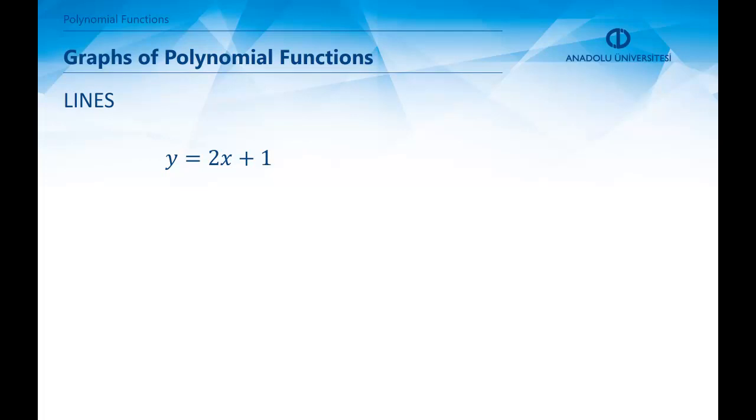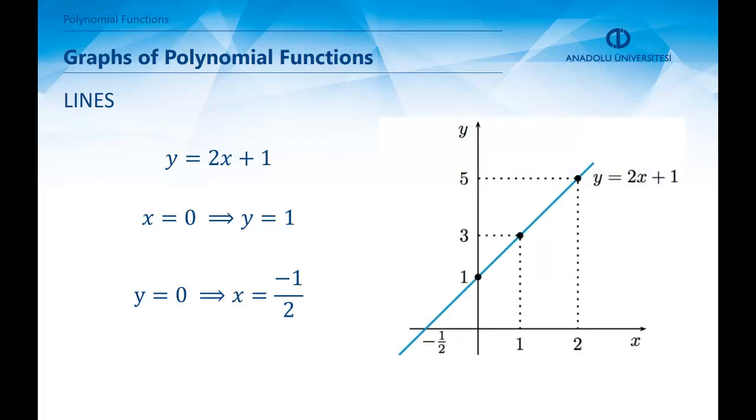Now, let's try to visualize the graphs of polynomial functions. And we are just going to do this for first-degree and second-degree functions. Let's take the function f(x) = y = 2x + 1. Now, if we insert x = 0 in this equation, we get y = 1. And if we insert y = 0 in this equation, we get x = -1/2. In the previous lecture, we have seen how to put these points in the plane. So if we insert these points in the plane, we get these two points, one on the y-axis and one on the x-axis. So if you combine these two points, we get the graph of the line y = 2x + 1.